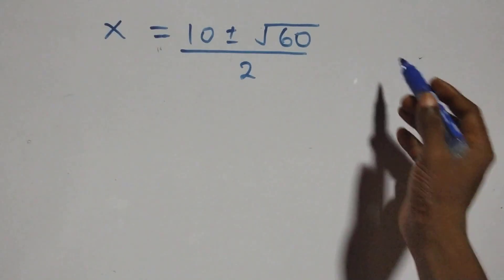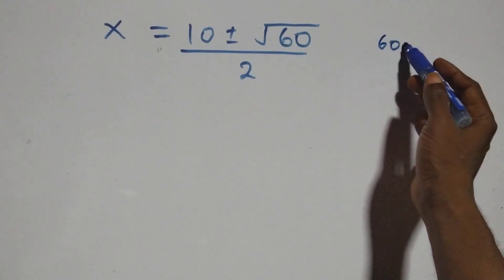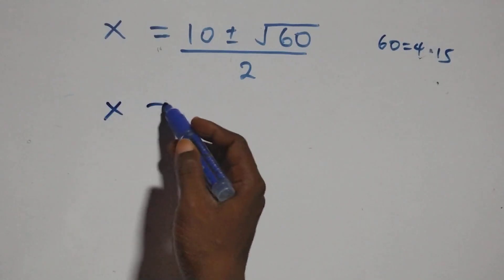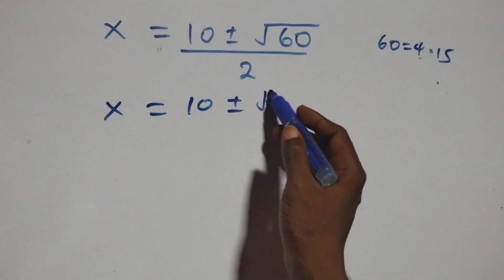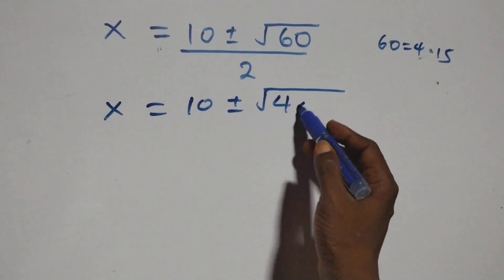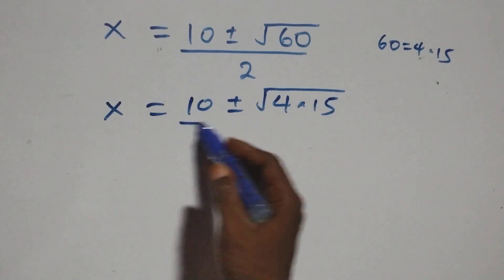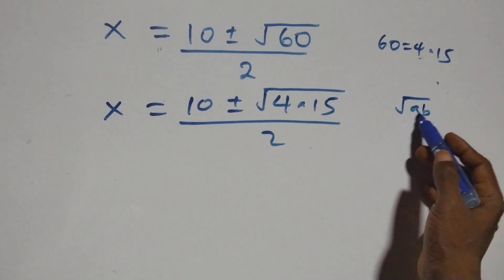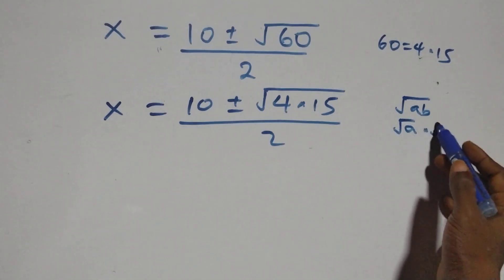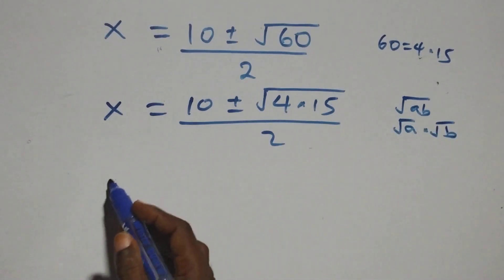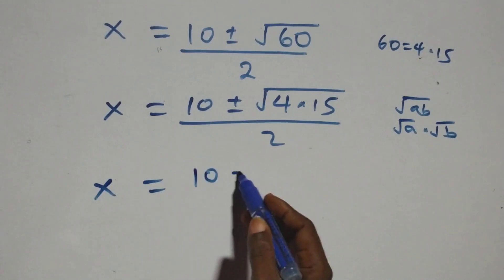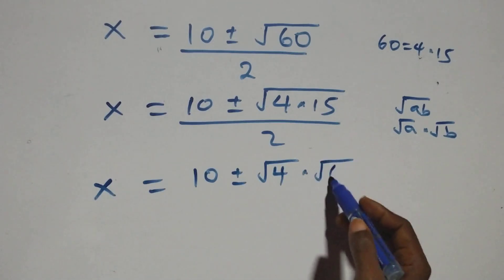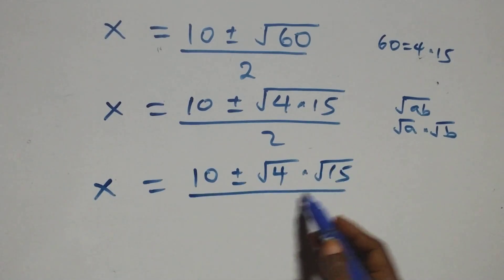At the next step, we express sixty as four times fifteen. So x equals to ten plus or minus square root of four times fifteen, over two. Using the property that square root of a times b equals square root of a times square root of b, we have x equals to ten plus or minus root four times root fifteen, over two.